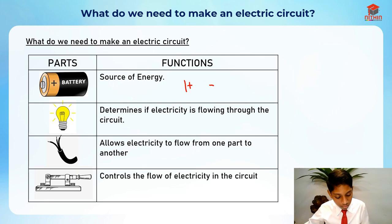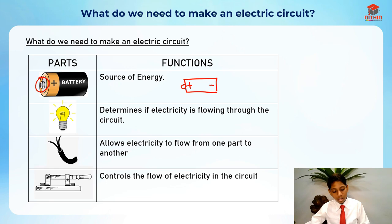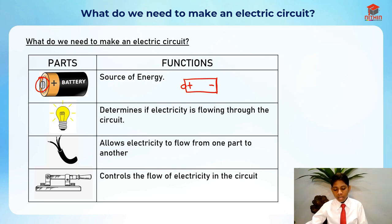Always remember: the positive side is the one with the extension, and the negative side is the one which is smooth and doesn't have an extension. Next is the light bulb.